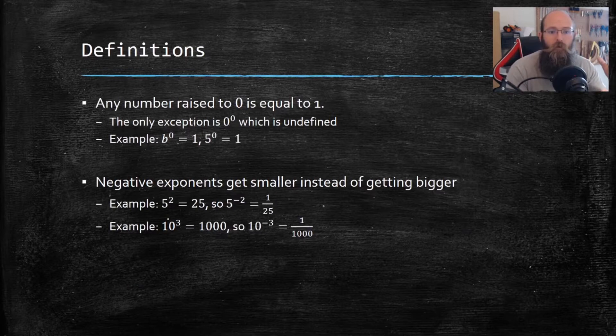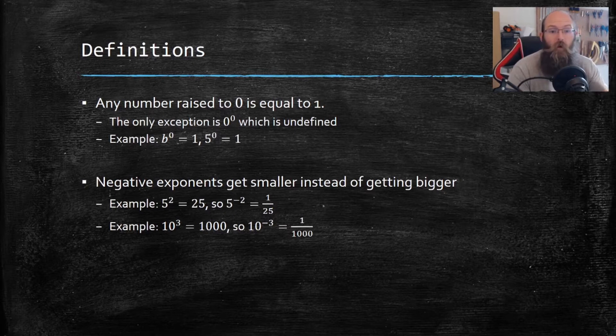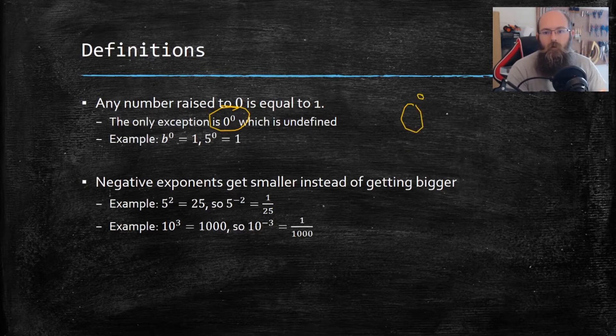Some definitions here that you need to know: any number raised to zero is equal to one. So 10 raised to zero power, 15 raised to zero power, one. B, some letter even, raised to the power zero equals one. The only exception to this, the only exception at all is zero. Zero raised to the zero power is undefined.